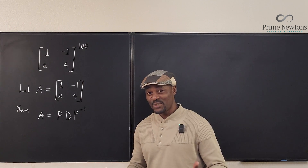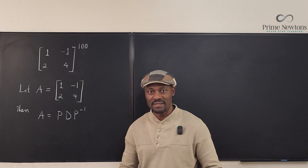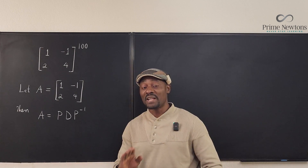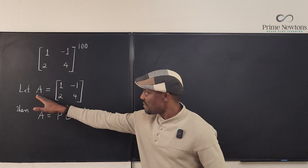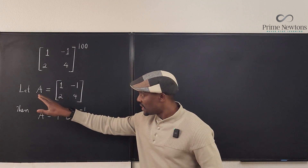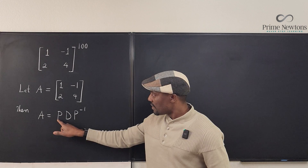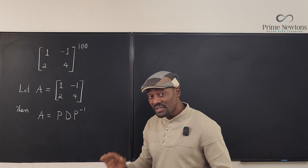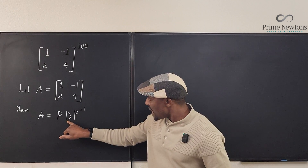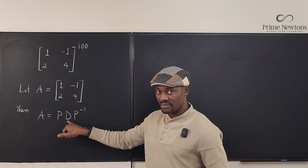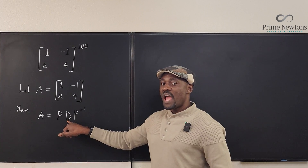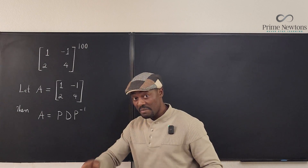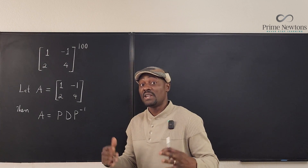So this is the secret to diagonalization — it is not complicated. Any matrix, if it is diagonalizable, can be written as P D P⁻¹. The matrix D in the middle is a diagonal matrix, meaning every entry is zero except on the main diagonal, where you'll find the non-zero entries.